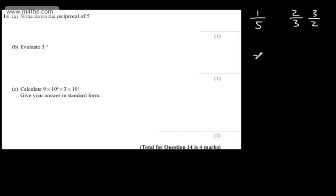In part B, we need to evaluate 3 to the power of minus 2. This is going to be 1 over 3 to the power of 2, which will give us 1 over 9. So one mark for part B.